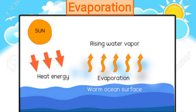More than 70% of the earth's surface is covered with water. Water exists in nature as snow, liquid water, and water vapour, and these states are interchangeable. The heat of the sun changes water into water vapour by a process called evaporation. If we keep a bowl of water out in the sun, the level of water in it goes down by evening because the heat of the sun has evaporated some water.